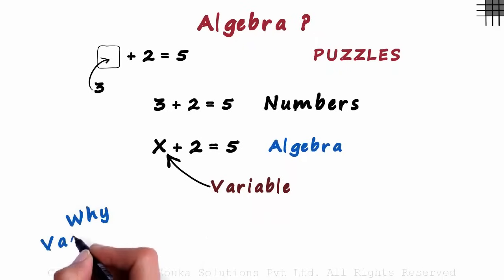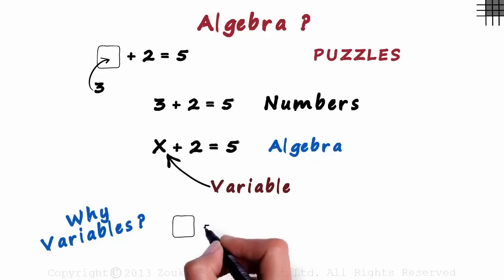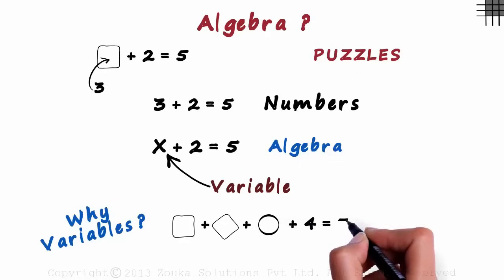But why use variables? Why not boxes like these? Let's assume there are three unknown numbers. Using shapes we can write it as a square plus a slant square plus an empty circle plus 4 equals 7.